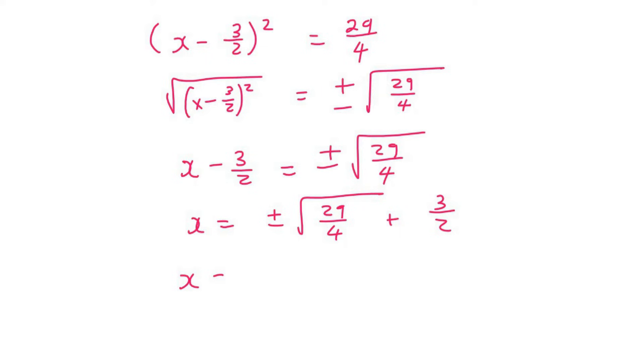So our first answer will be when this one is a positive. So I'm going to go 29 over 4 plus 3 over 2. And that's going to give us—be careful not to type the 3 over 2 in the square root as well when you're on your calculator. And that's going to give us 4.19 if you're using two decimal places.